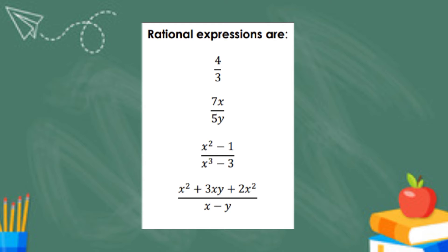For our third example, we have x squared minus 1 all over x cubed minus 3. The P here is the whole x squared minus 1, while the Q here is the whole x cubed minus 3.